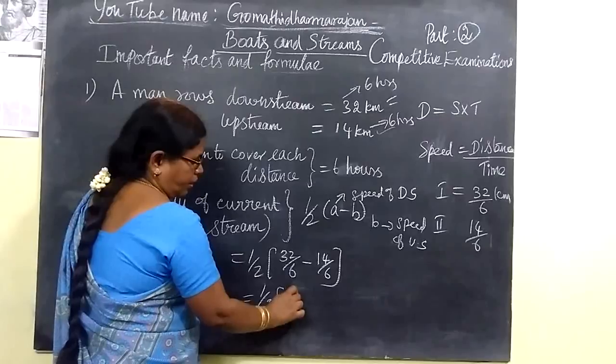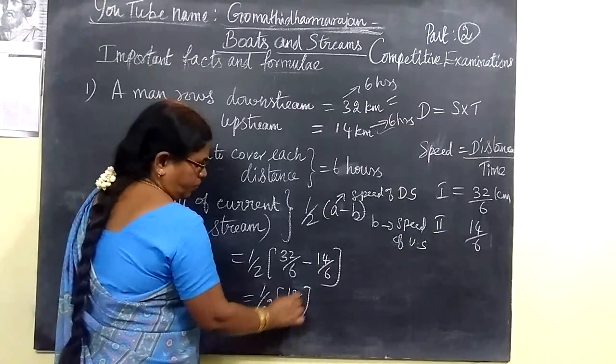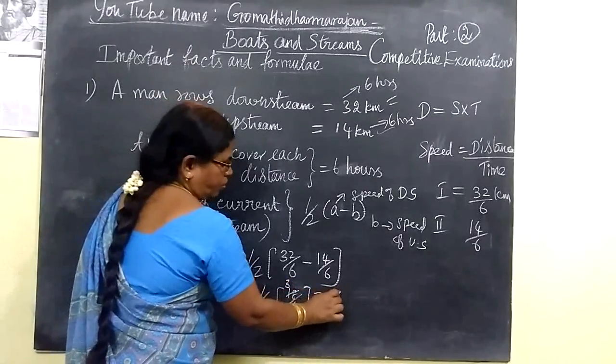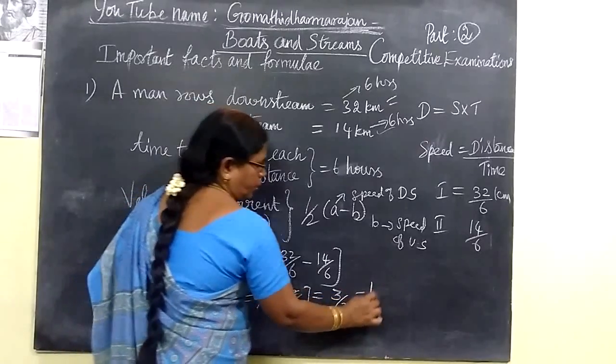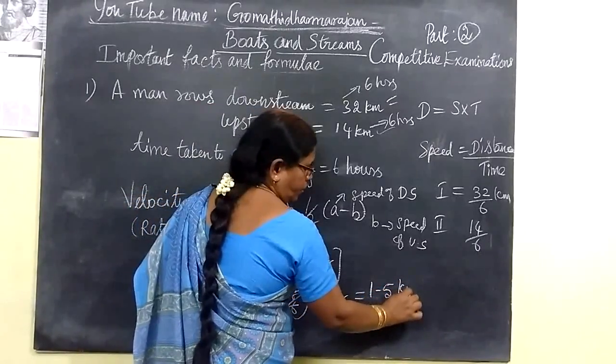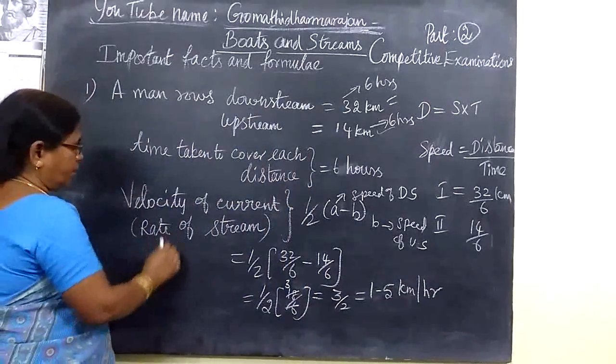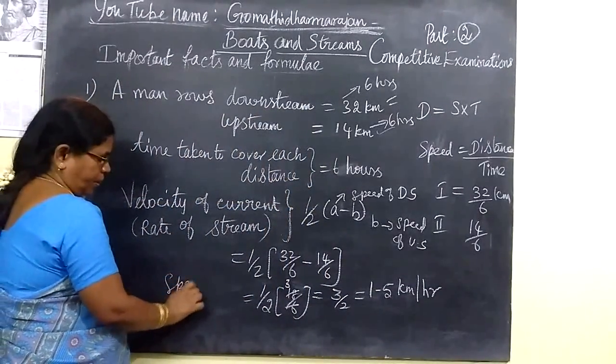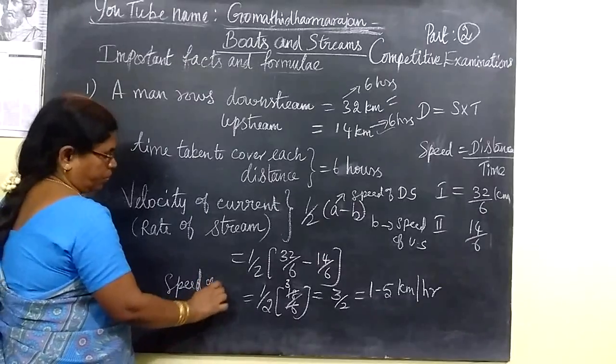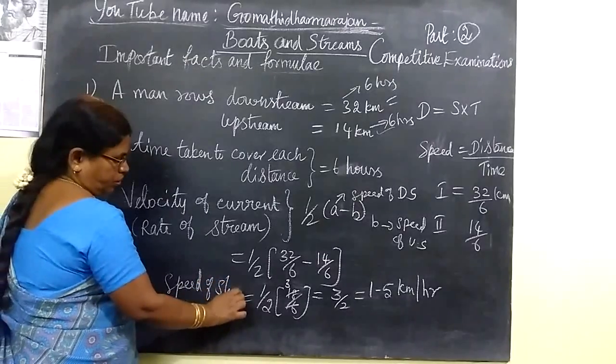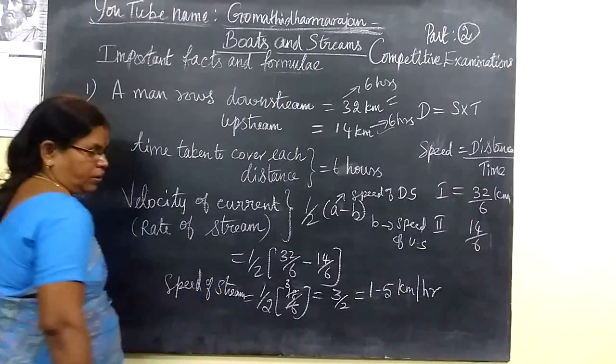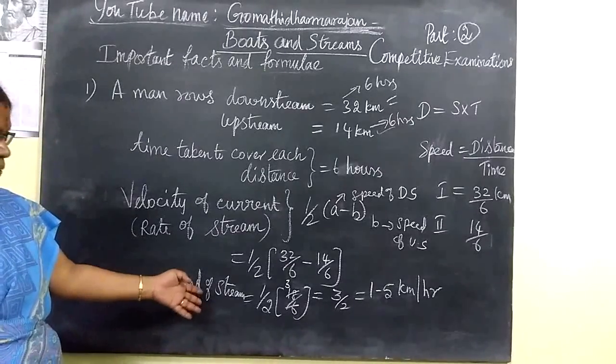So half bracket, here 18 by 6, we cancel 3, so 3 by 2. That means 1.5, the unit will be km per hour. This is nothing but speed of stream. The stream is 1.5 km per hour.